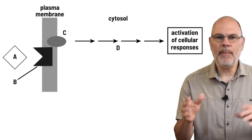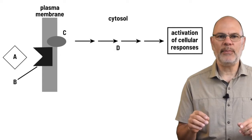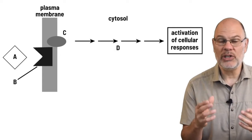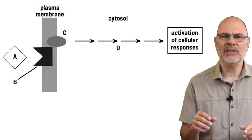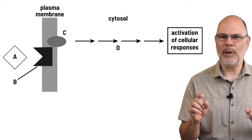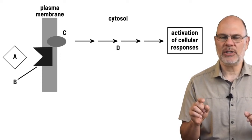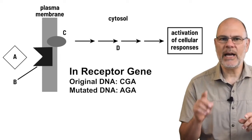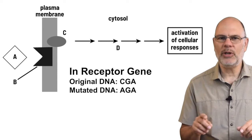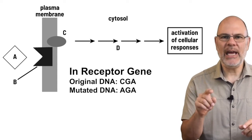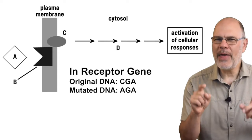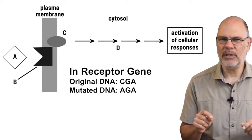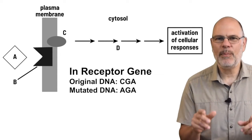Example 2. Here's a ligand that binds with its receptor, setting off a signal transduction cascade, changing the cell's activities. Let's disrupt this and see what gets changed. Let's mutate the DNA that codes for the receptor — change CGA to AGA. How might that change affect the system? Make a prediction.